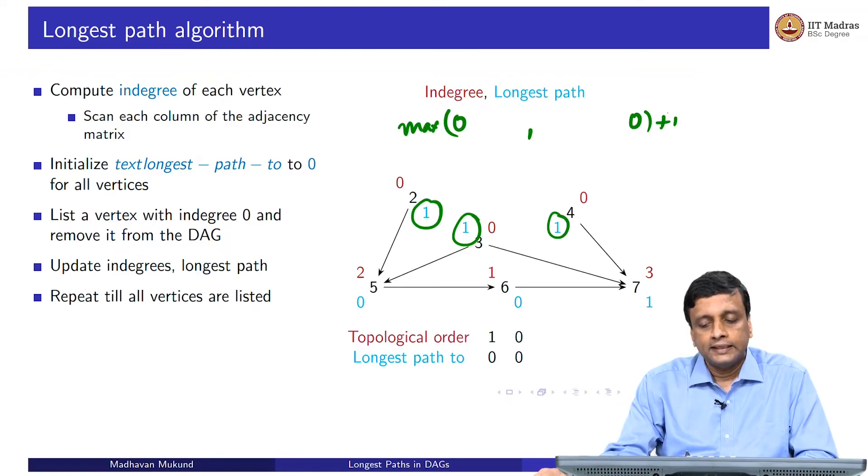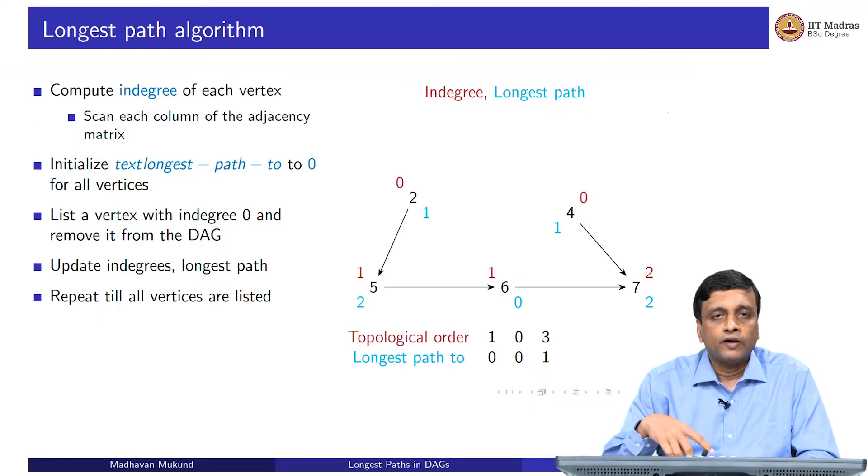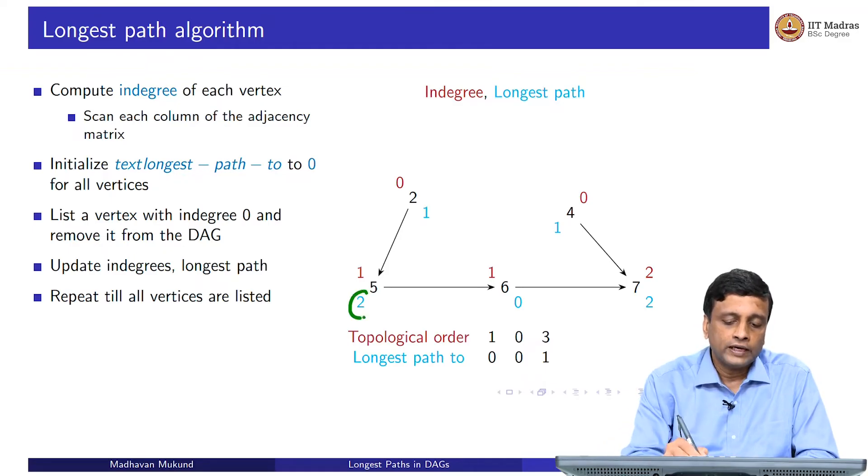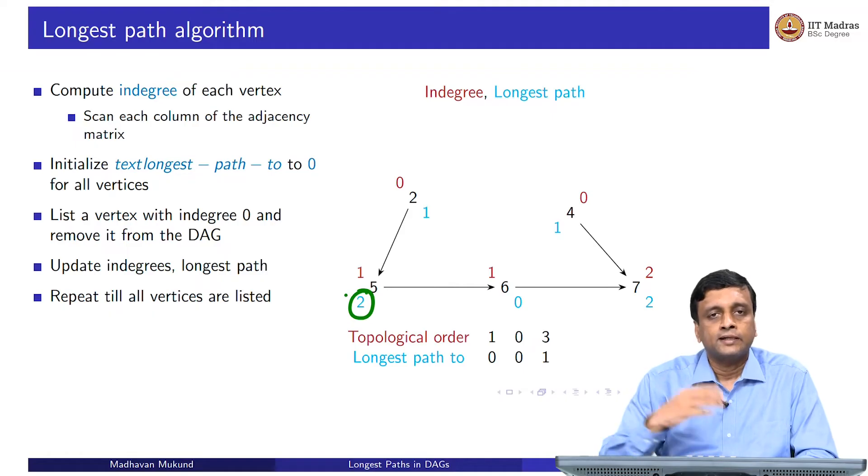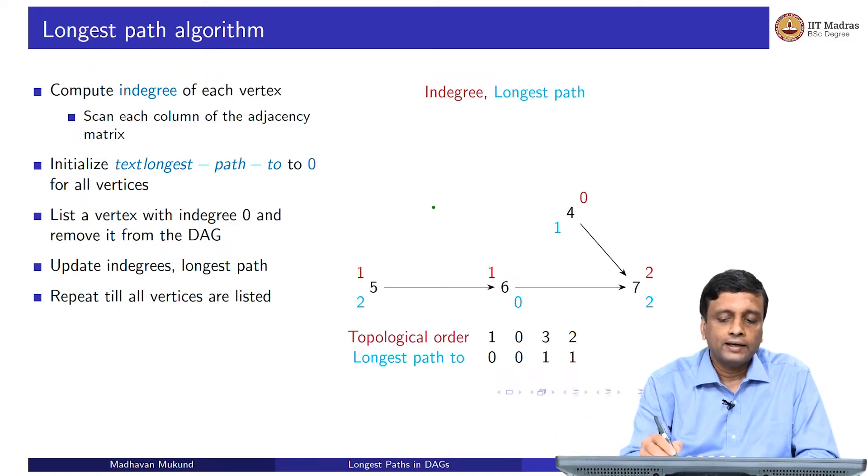Now I enumerate vertex 3. Vertex 3 currently already has a listed longest path of 1. And now 3 was pointing into vertex 5. So now 5 must take 2 steps to be reached because it has to be reached via 3 and 3 already takes 1 step. So the longest path of 5 which was earlier 0 as a default assumption has suddenly become 2. I keep doing this. Next I enumerate 2 and when I enumerate 2, nothing new happens because we had the situation like before where 2 and 3 both had longest path 1. When I updated from 3, I already knew that 5 needed longest path 2. So I get no change there.